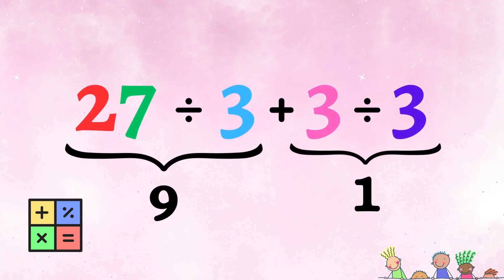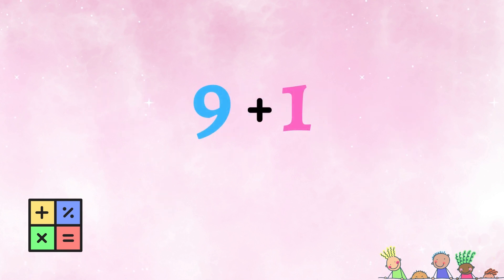Next, we do divisions. The first division is 27 divided by 3, which is 9. The second division is 3 divided by 3, which is 1. 9 plus 1 is 10.